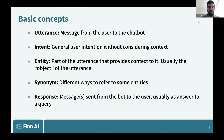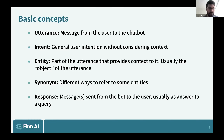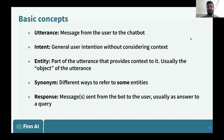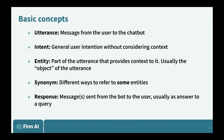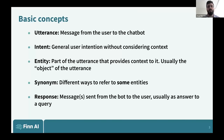An entity is usually the object of the utterance. Synonyms are different ways to refer to some entities. We only use synonyms and fuzzy matching for things that have a finite number of ways to refer to them — like names of products. For things that have infinite ways to refer to them, like dates or places, we use machine learning to detect them. Responses are one or multiple messages from the bot to the user, whether an actual response to an utterance or a welcome message.